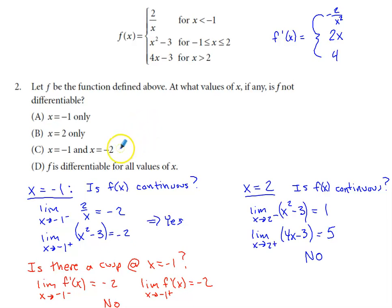So there are only two x values that we really need to concern ourselves with here, negative one and two, if you look at these answer options. And those are the values where this piecewise function has the potential to have some issues.